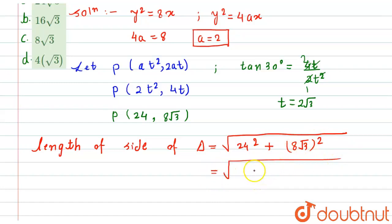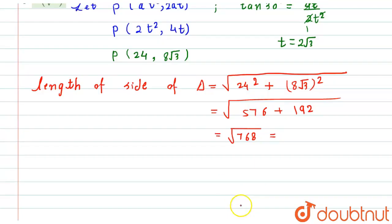plus now 8 squared is 64 times √3 squared will be 3. 3 multiply by 64 will be 192. On adding you will get 768. On further solving this value will become equal to how much? That is 16√3.